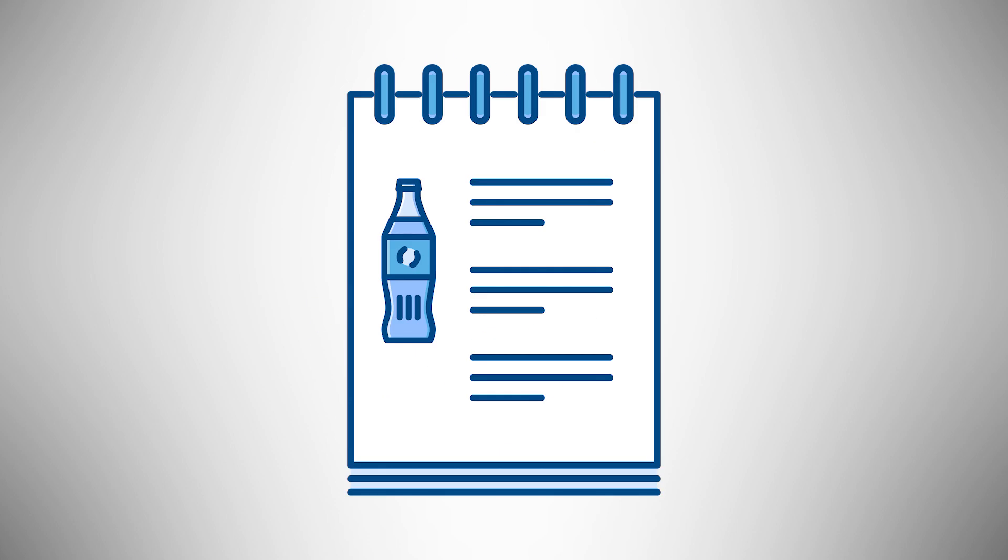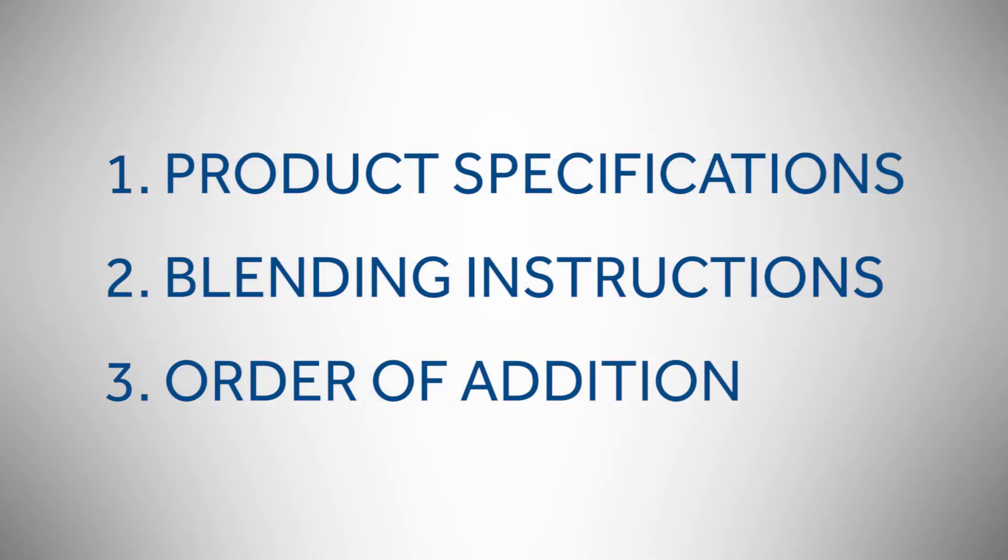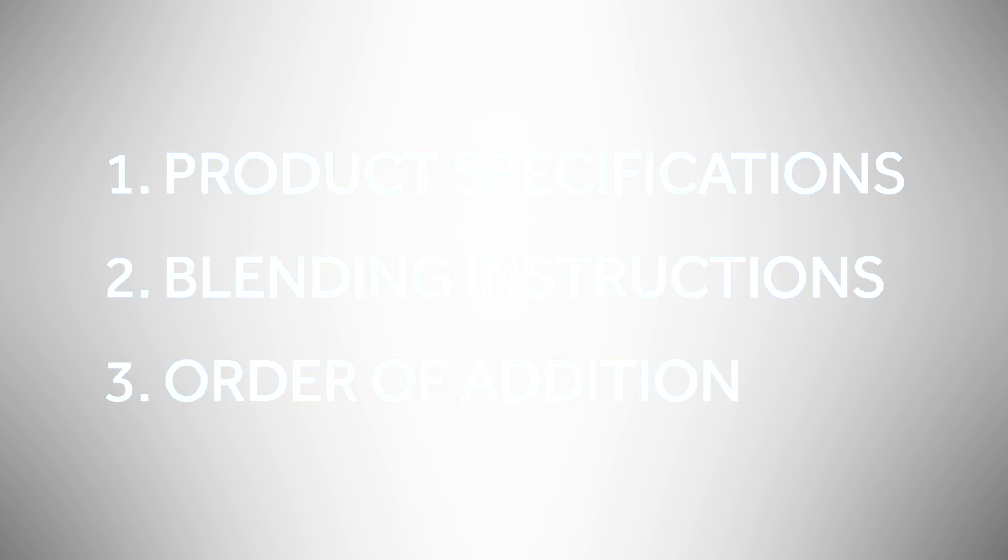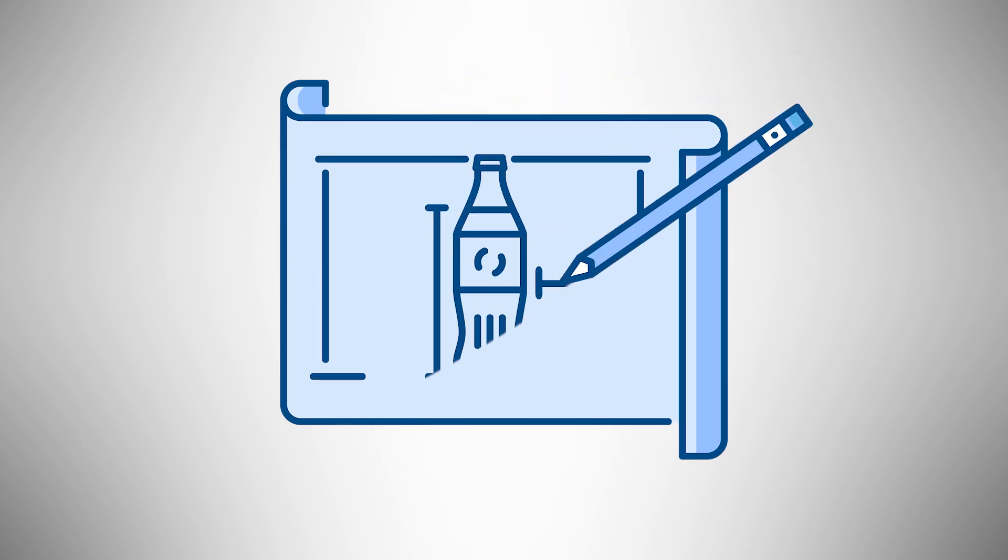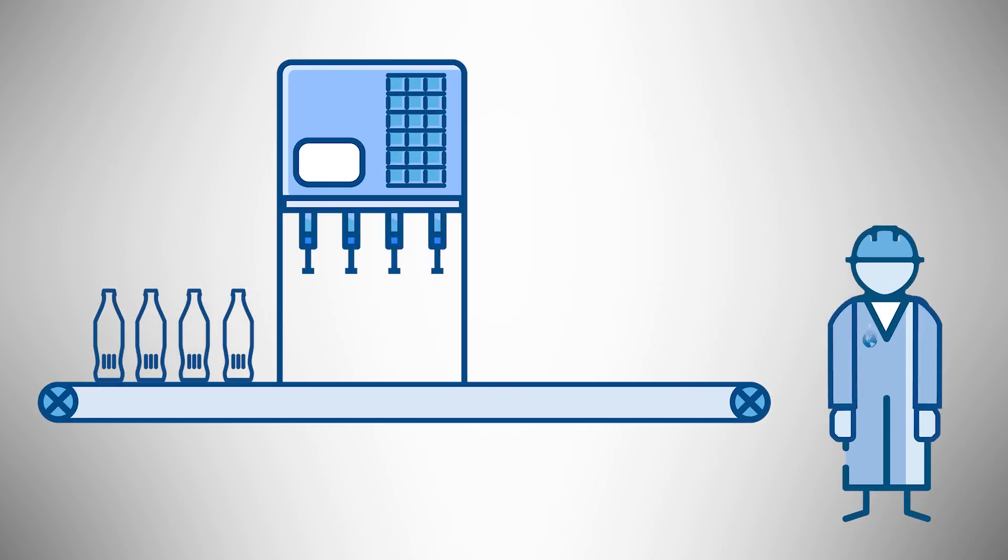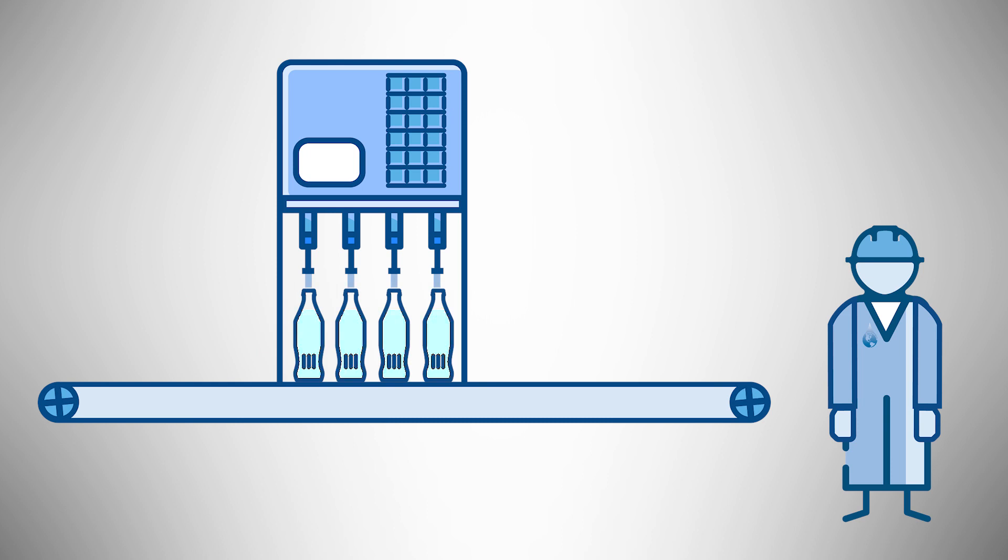Co-packers also want you to provide a production manual. This is just what it sounds like, a book with specifications, blending instructions, and all the steps needed to make your beverage. Here at Flavor Man, we create the beverage manual and we'll also send a specialist to your first production to make sure that the process goes smoothly.